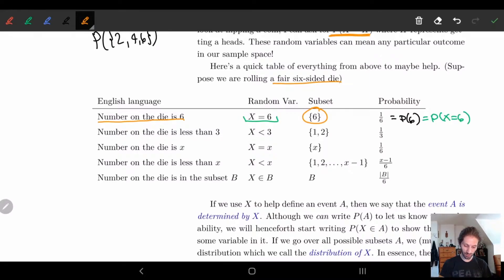How about the next one? The number on the die is less than three. Normally, we would have to think about it. We would get our subset one or two, and here we get the probability of one plus the probability of two. In the new way, we just say, if the number is less than three, so X has to be less than three. Notice how this works a lot more nicely with the English language. It fits super well. In this case, we get probability that X is less than three.